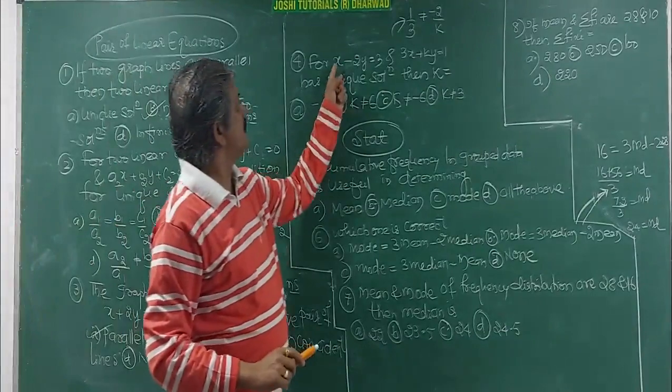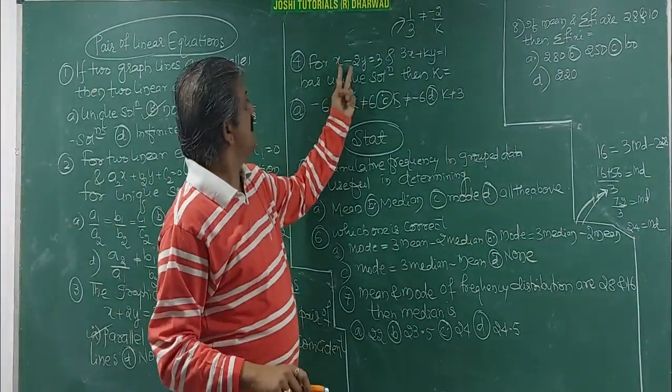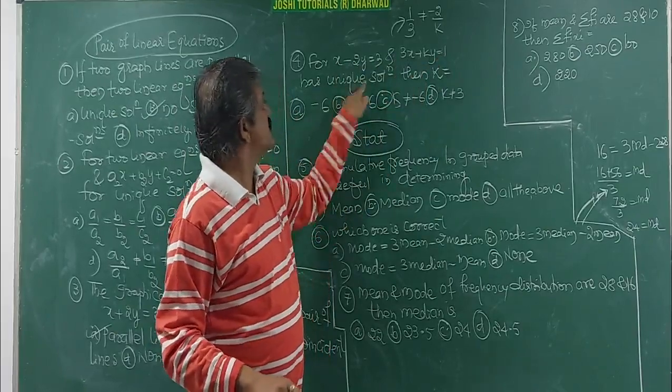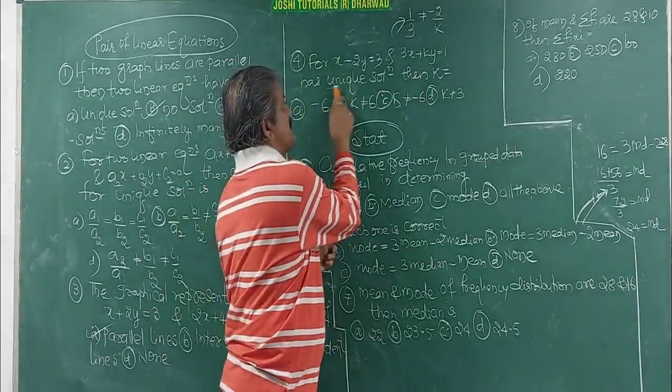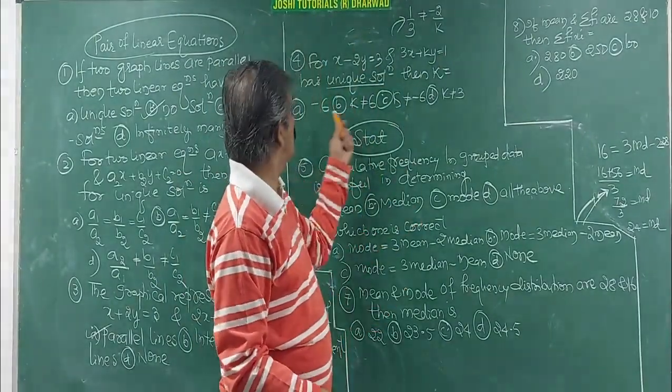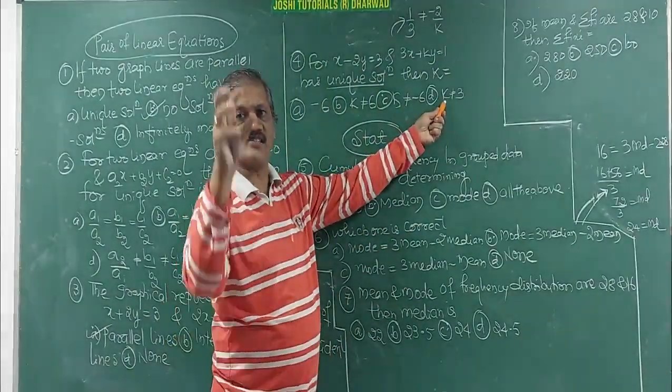Next, here, tricky question. x minus 2y equal to 3 and 3x plus ky equal to 1 has unique solution. They have given it as a unique. Means A1 by A2 is not equal to B1 by B2. Which of the following answer is correct for K?